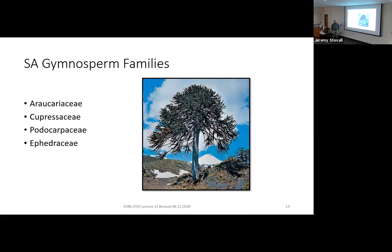Next, let's look at some gymnosperms. Like with trees of Australia, we'll see more members of the Araucariaceae, an exclusively Southern Hemisphere family of gymnosperms. We're also going to look at the podocarps, which we haven't discussed yet. The podocarps are not quite as diverse as the Pinaceae, but they're pretty diverse — our second most diverse group of gymnosperms.